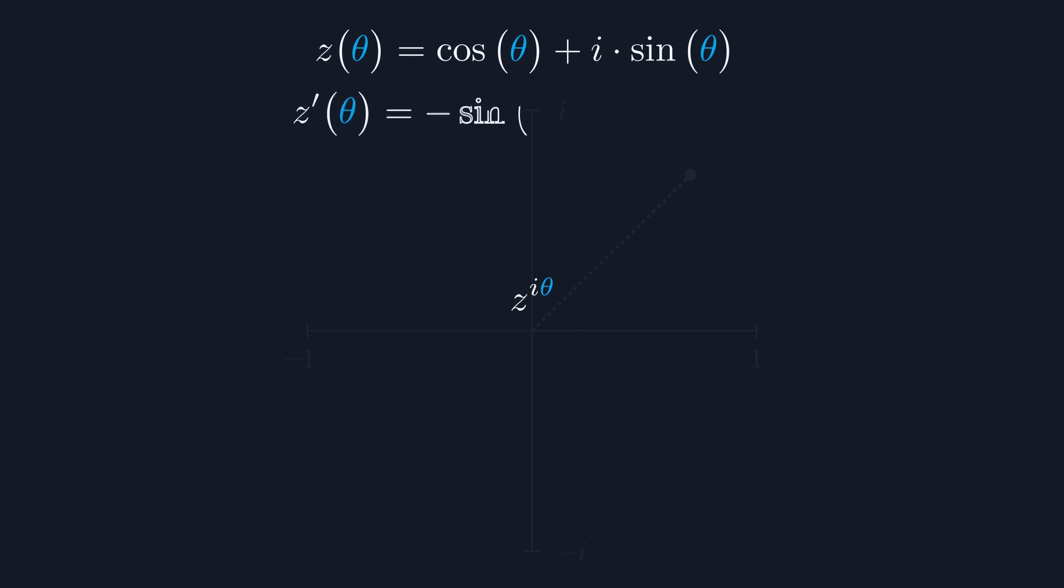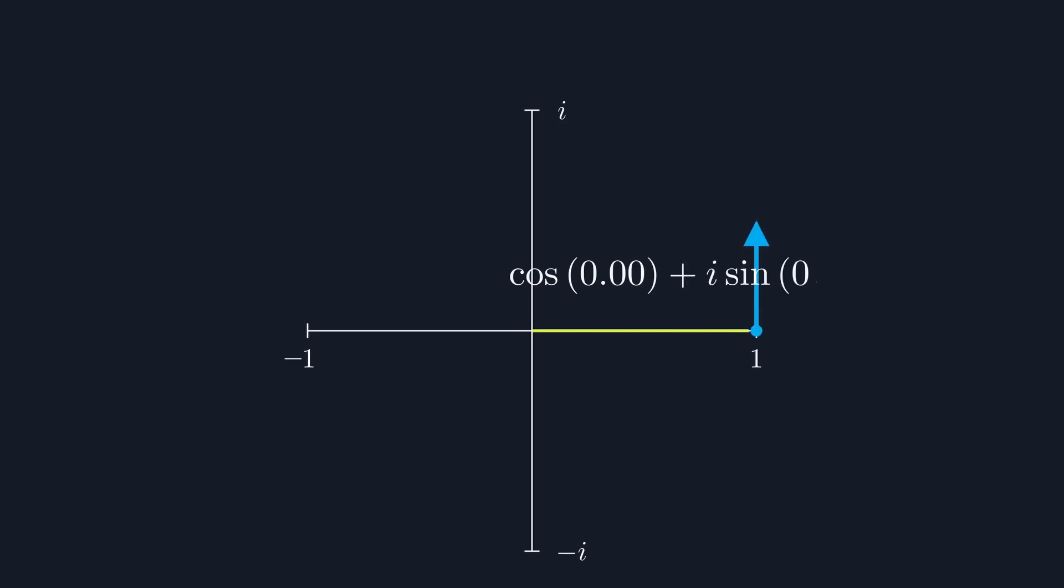By taking the derivative of our polar coordinate equation, if you're not familiar with calculus, you can consider this getting the velocity of our function at each point. Notice that the velocity of our function is a 90 degree rotation of our function's position. Taken together with the fact that our function equals 1 at an angle of 0, we can find all the other points of our function.